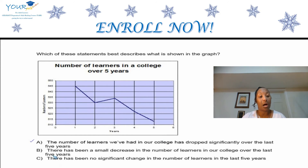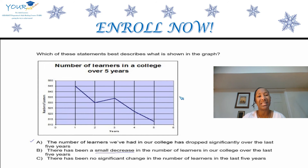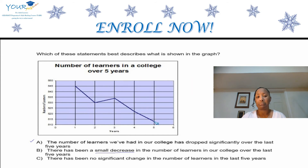Now let's look at Option B, which states there has been a small decrease in the number of learners in our college over the last five years. The key term here is 'small decrease.' When we look at our chart, would you say that a drop from 545 to nearly 513 is a small drop? We're looking at roughly 30 students — is that a small drop or a pretty large drop in terms of enrollment? We know Option B has a flaw: it's not actually a small decrease but rather a greater decrease.